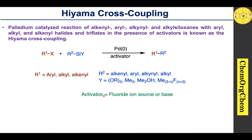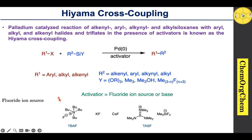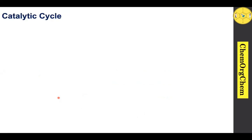To enhance the reactivity of silanes and promote silicon-palladium transmetallation, fluoride ion-based sources are mostly used as activators to promote the Hiyama cross-coupling reaction. Some fluoride ion sources include TBAF (tetrabutylammonium fluoride), potassium fluoride, cesium fluoride, and TASF (tris(dimethylamino)sulfonium difluorotrimethylsilicate). Now let's dive into the catalytic cycle.